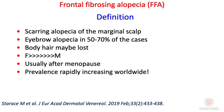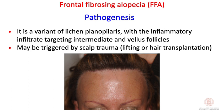FFA is a scarring alopecia of the marginal scalp, but it can also involve the eyebrows, eyelashes, and other body areas. Females are more affected than males, usually after menopause. The prevalence of FFA has rapidly increased worldwide, with many publications reporting large numbers of affected patients. It is classified as a variant of lichen planopilaris, with the inflammatory infiltrate targeting intermediate and vellus follicles.